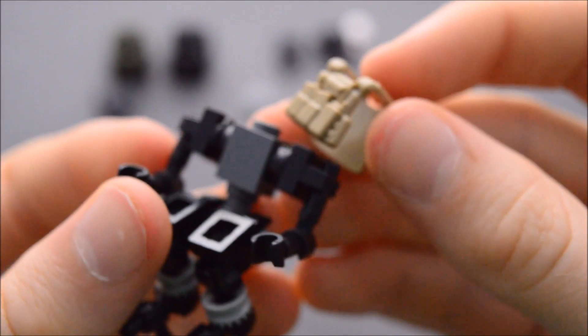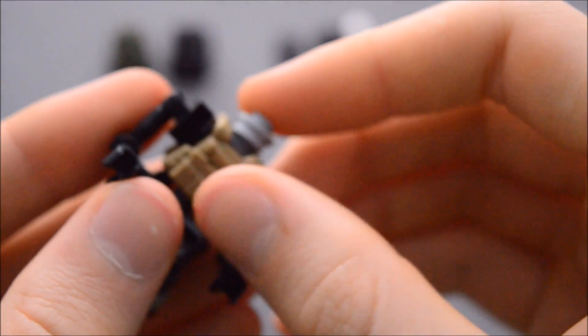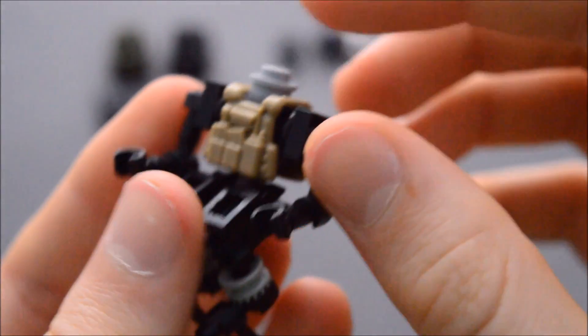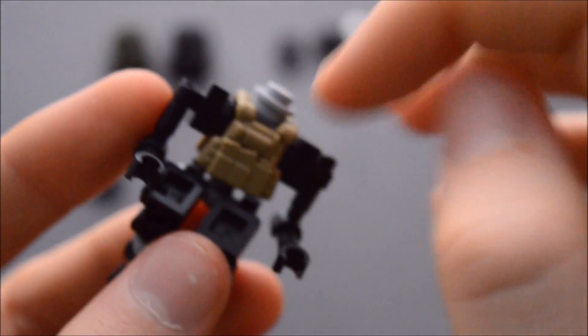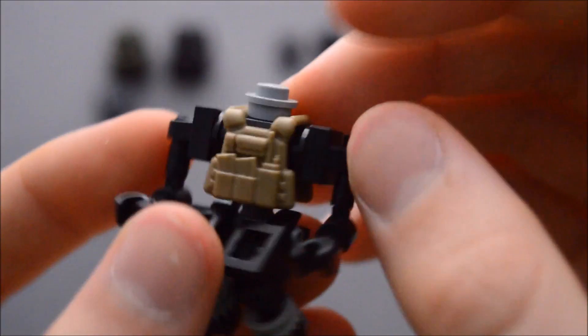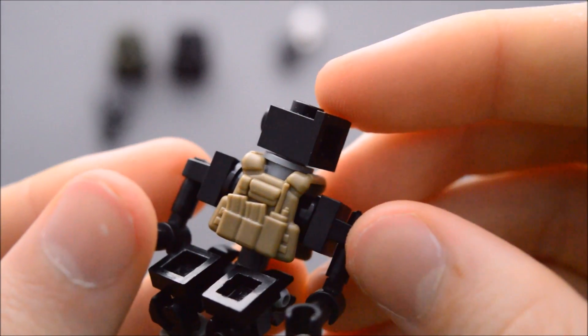So what you need is a vest and you're going to put the vest right over the top. And then a one by one round plate fits right over, right on the stud right in between the two straps of the brick arms vest. Then we're going to take a headlight brick and then put it like that.